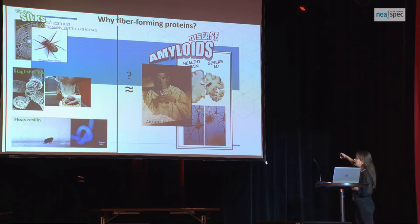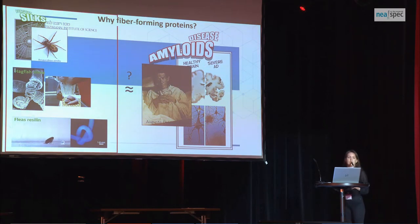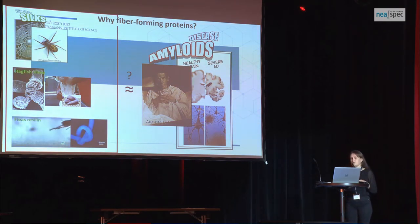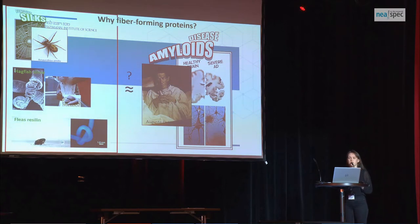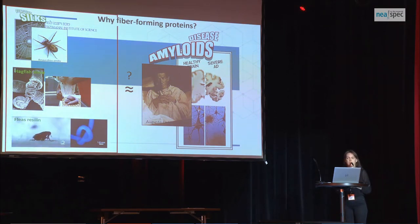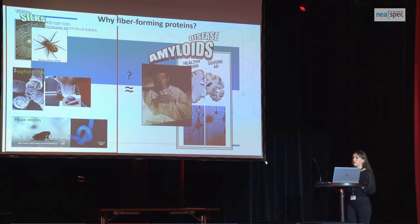In such cases, the fibrillar protein constructs have the general name amyloids. Amyloids are usually identified by a certain structure: they are rich in beta-sheet, they have a cross-beta arrangement, a certain diffraction pattern, and a certain chemical kinetics.